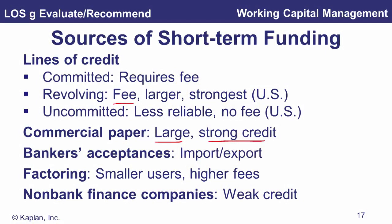Factoring involves selling your accounts receivable to a debt factor at a discount — for example, receiving 95 for a balance of 100. You get cash up front while the factor chases the debtors. Alternatively, weaker-credit companies can turn to non-bank finance companies — distressed lenders who will provide funding but at very high interest rates.